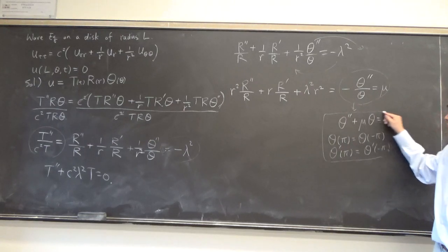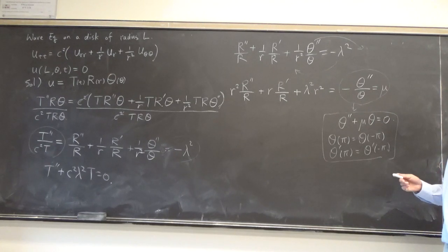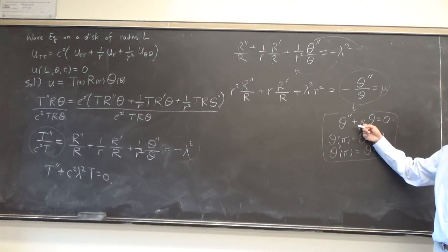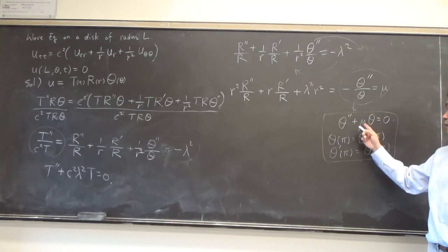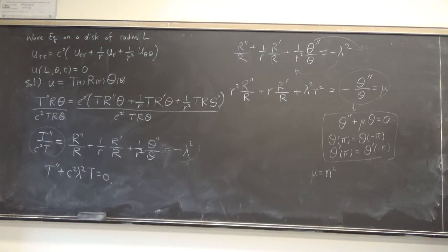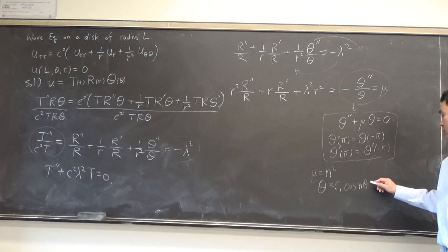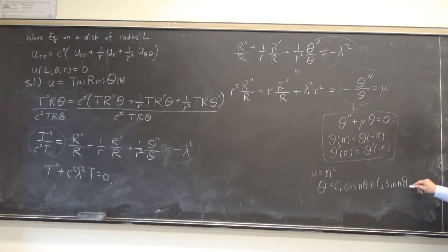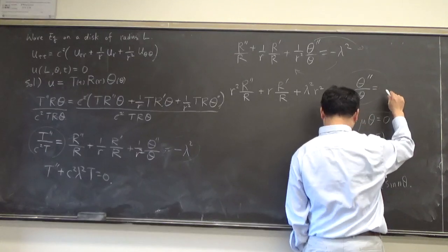The eigenvalue is μ = n² for integer n. The only time you have a non-trivial solution satisfying all of these is when mu equals some integer squared. Then theta equals C1·cos(nθ) + C2·sin(nθ). This forces mu to equal n².